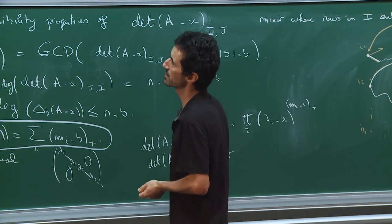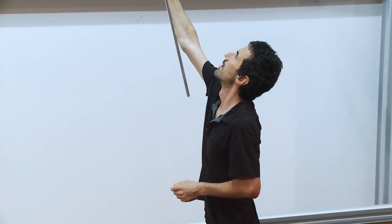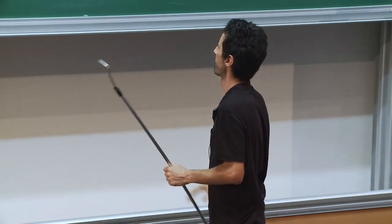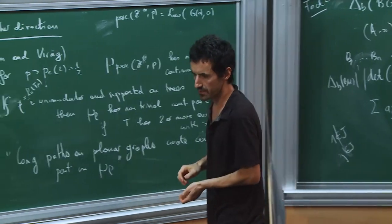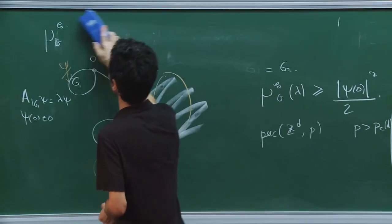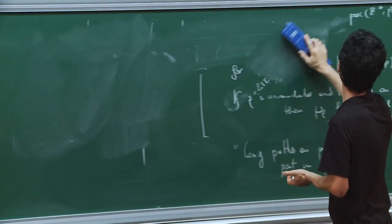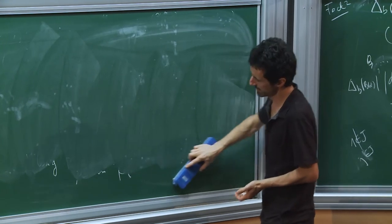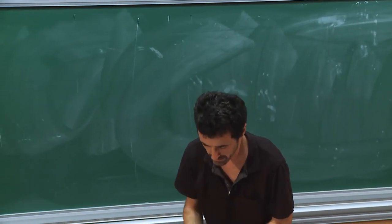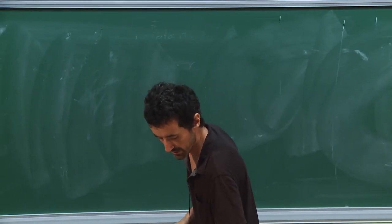For trees we have an analogous criterion that I won't detail here because time is short. The finite-graph theorem doesn't directly extend to infinite graphs since it's based on determinants, but there is a separate criterion that works directly on infinite unimodular rooted trees.